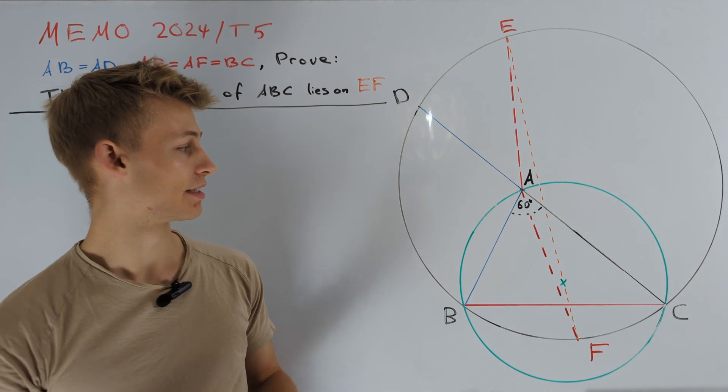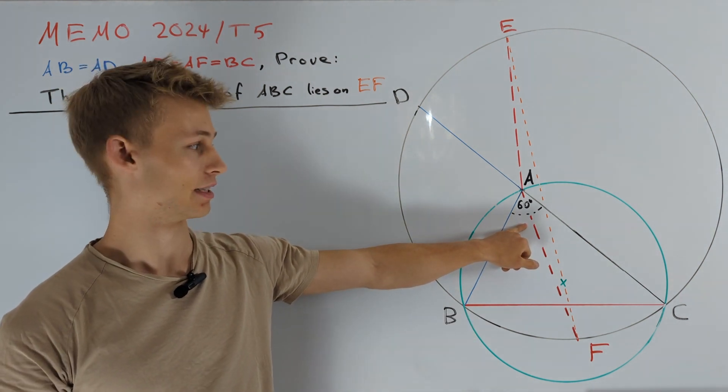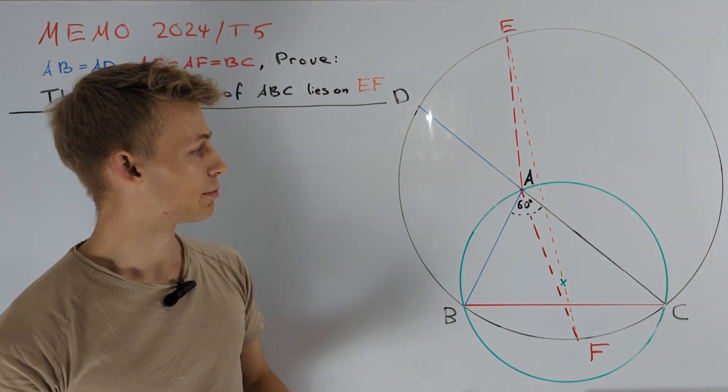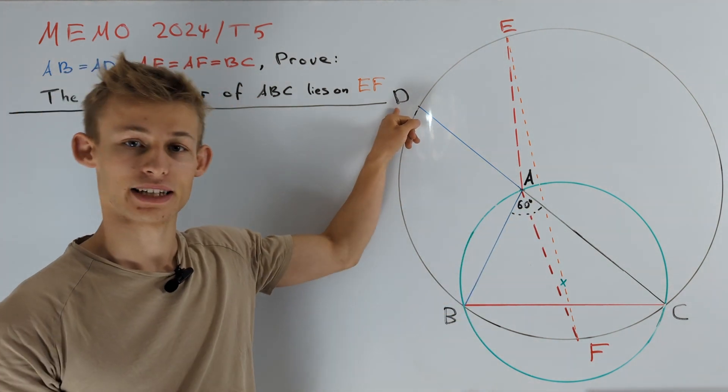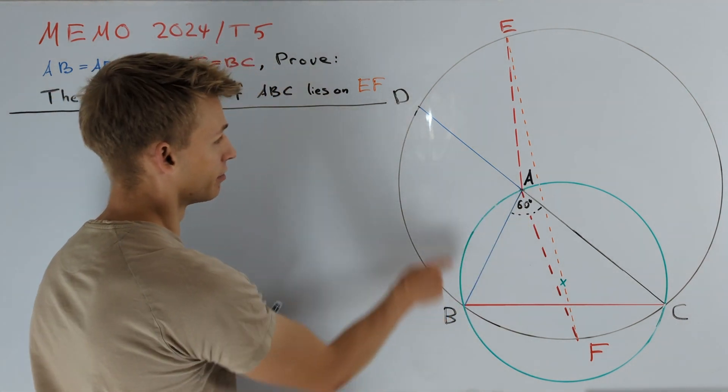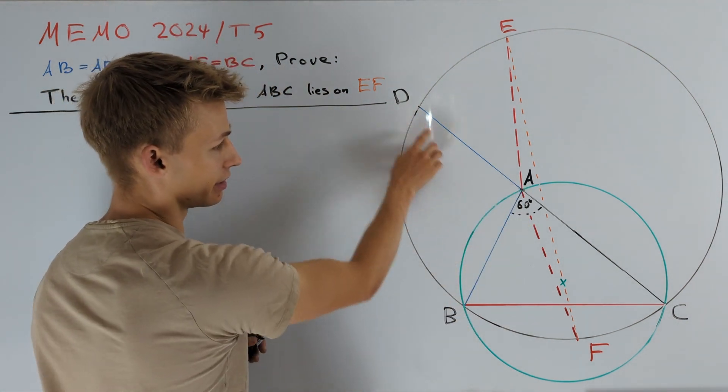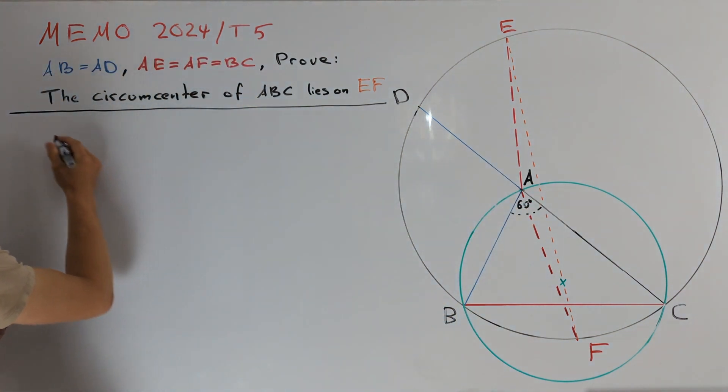The first thing we can do is to try to use this angle condition here to calculate some more angles, and indeed this is possible because we can use the fact that triangle ABD is isosceles. This allows us to calculate the angles ABD and BDA, namely they are half of angle BAC.